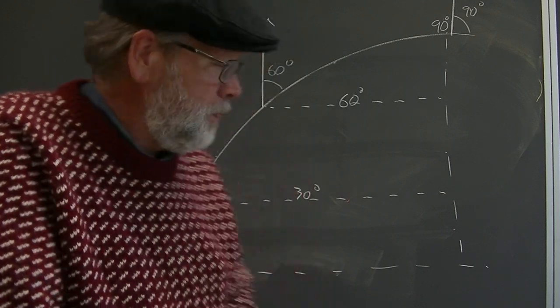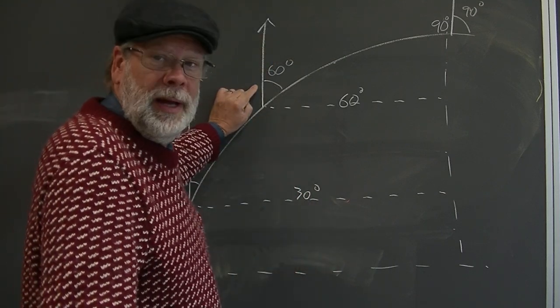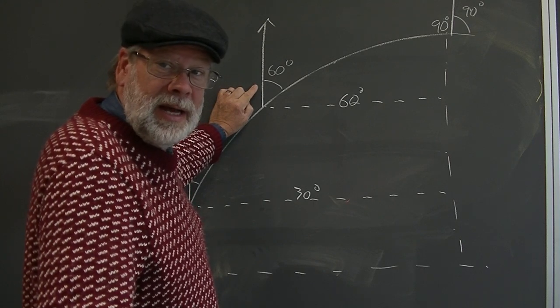Starting to sound like a pattern. At 60 degrees latitude, you'd measure Polaris to be at 60 degrees in the sky.